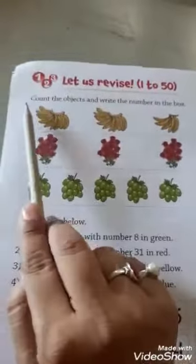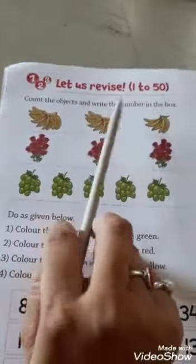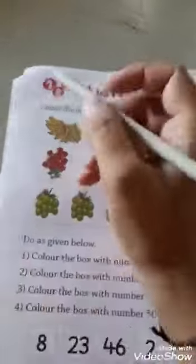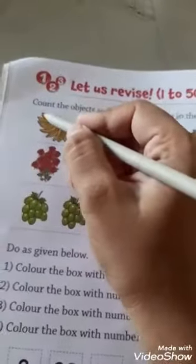So kids, today we are going to learn about Let's Revise 1 to 50. Okay kids, count the objects and write the number in the box. Okay kids, so count with me. This bunch is banana bunch. Right, count with me.